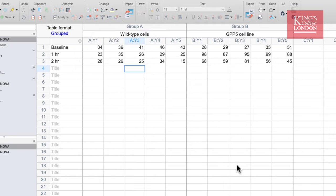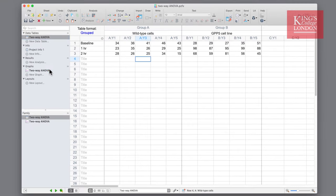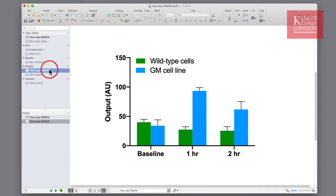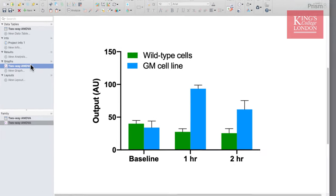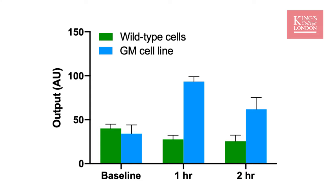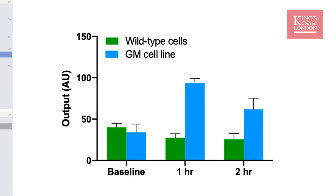We can plot these graphs — in fact Prism plots them automatically for us in the graphs tab of the navigation panel. Looking at the graph objectively, one might suggest that the genetically modified cell line has a bigger response at one and two hours compared to the wild type cells. Therefore we would test this using a two-way ANOVA.